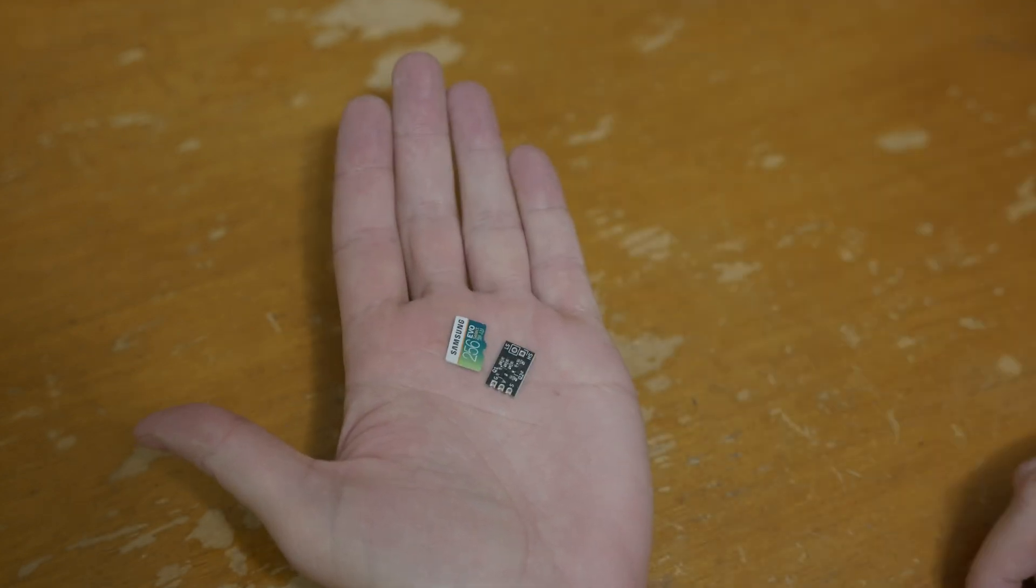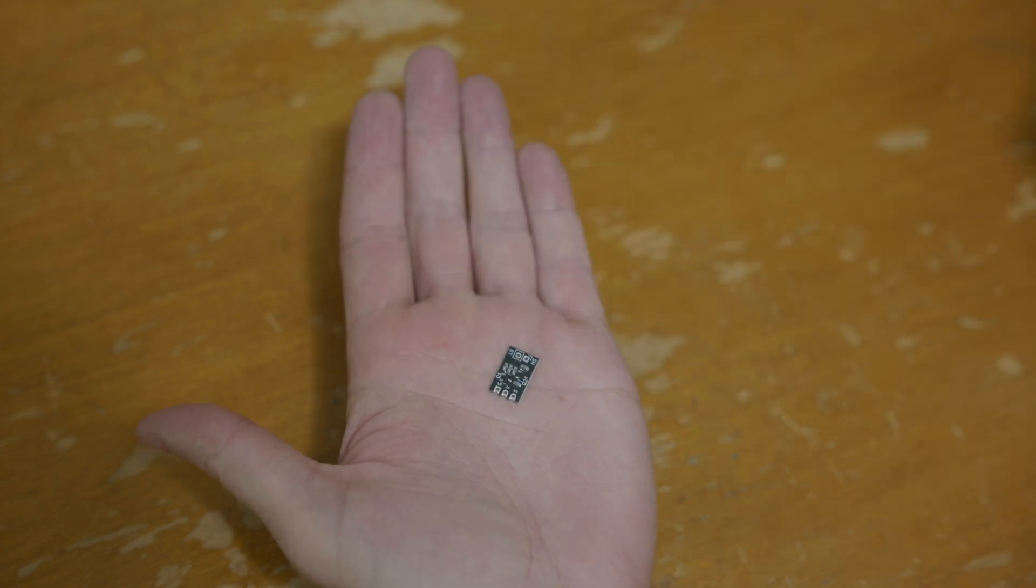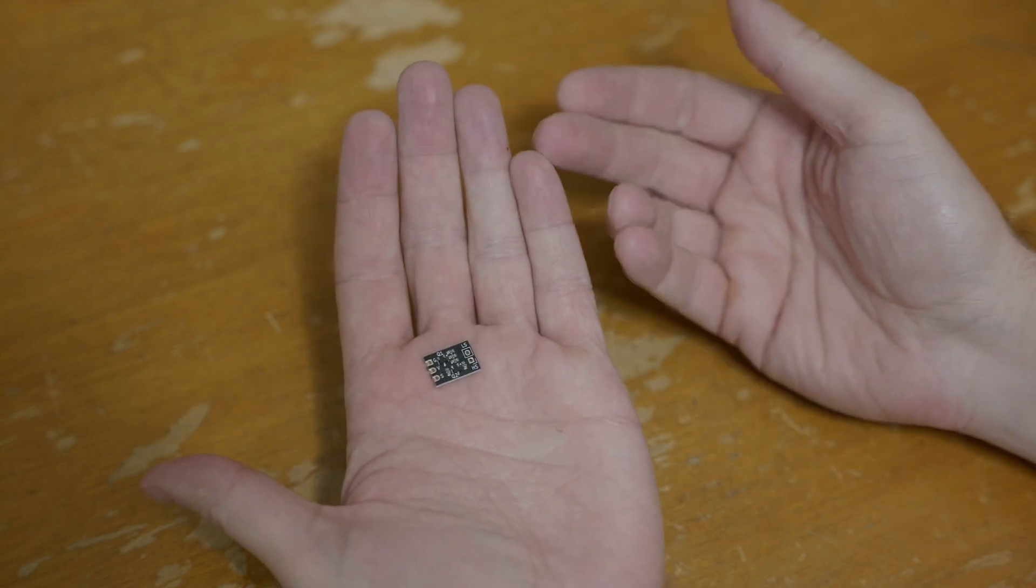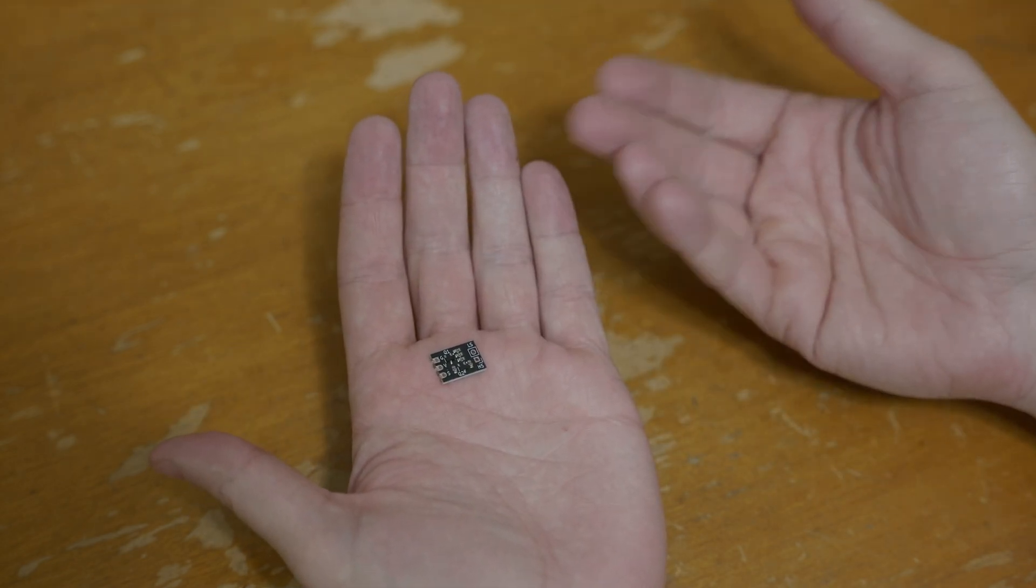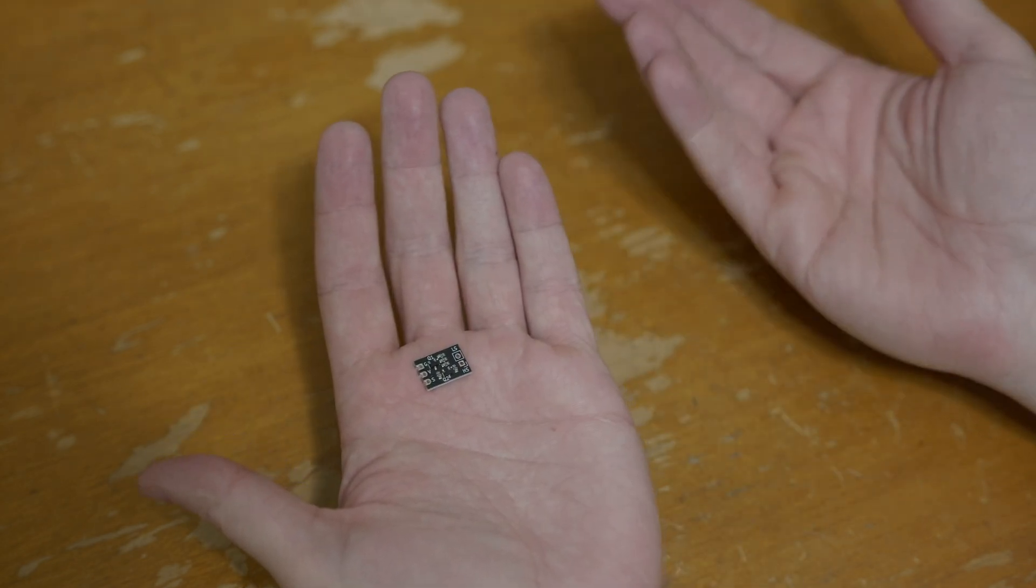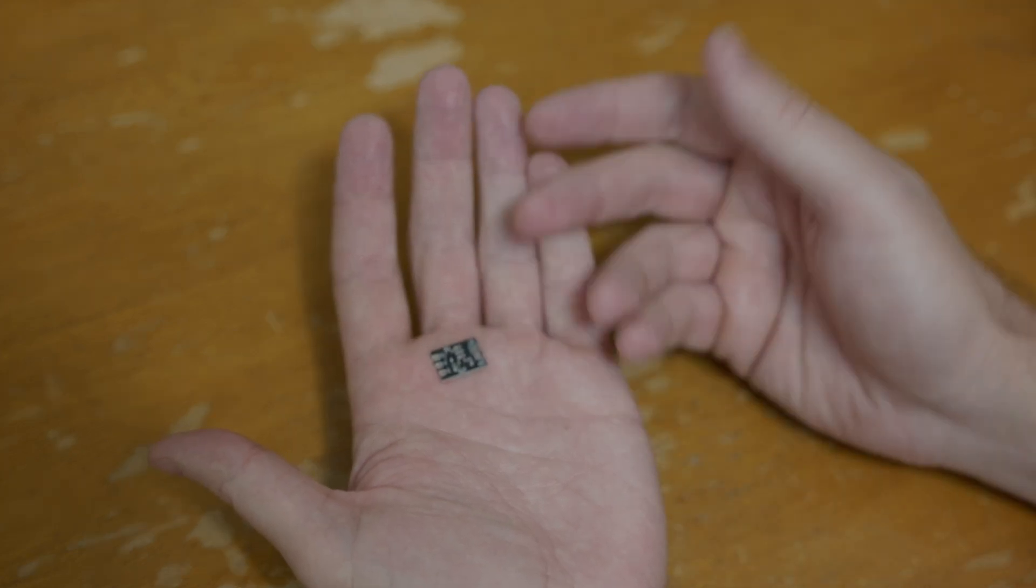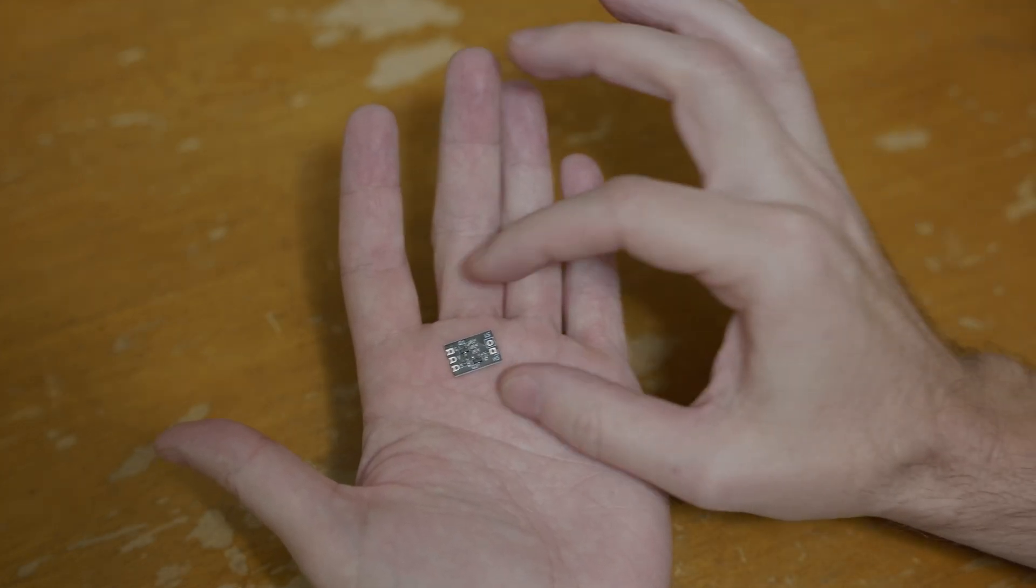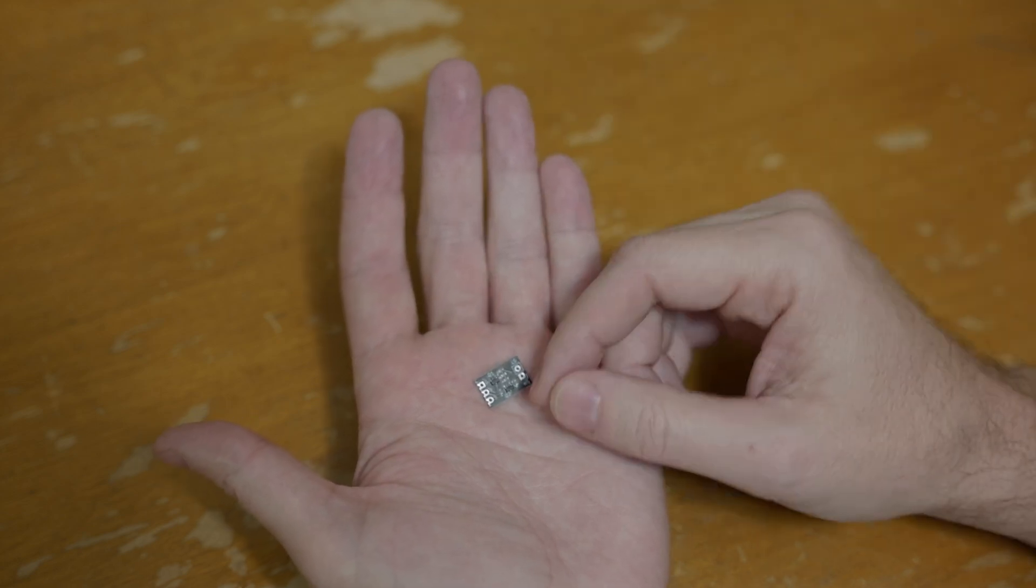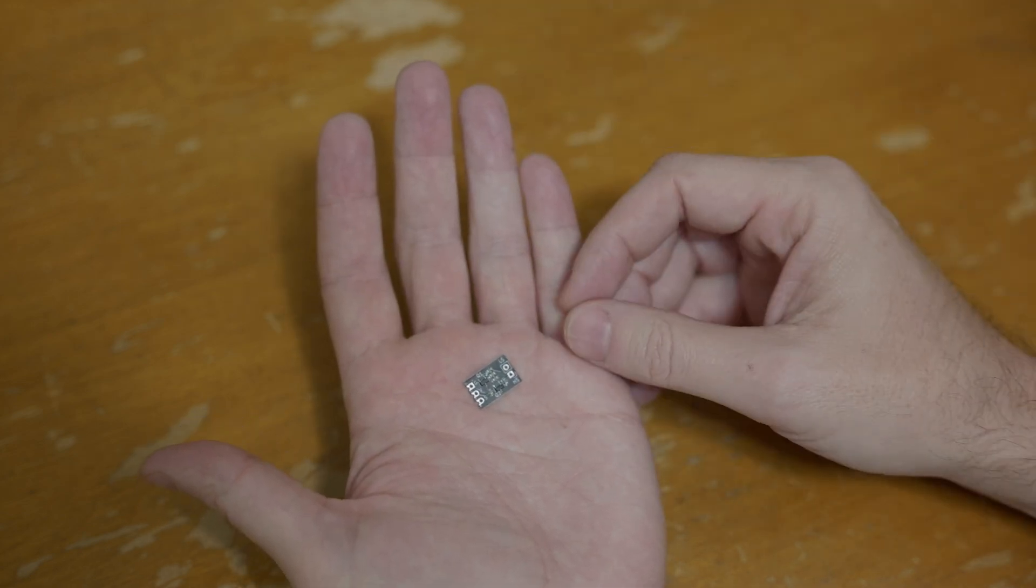So the PCB ended up being about the same size as a microSD card, so hopefully that won't be too big to integrate into your projects. Now, if you're not familiar with this circuit, I will put a link down below to the previous video that I did explaining the schematic and how this thing works. In this video, I'll just talk about the actual PCB I made, and how you might buy one, should you be interested.